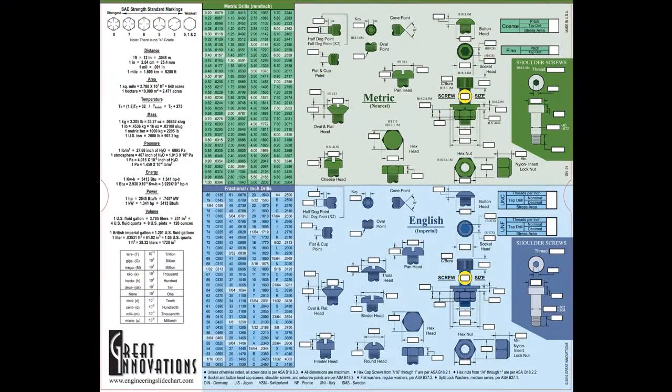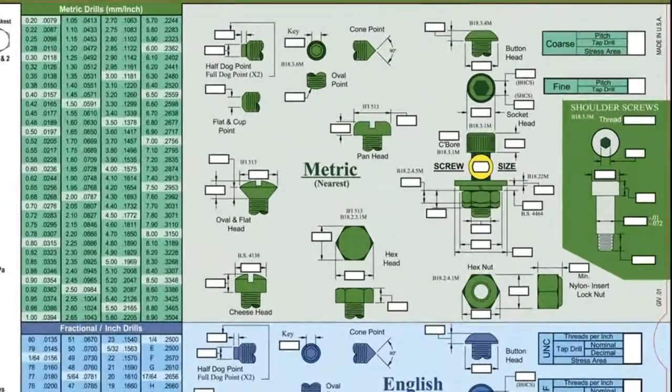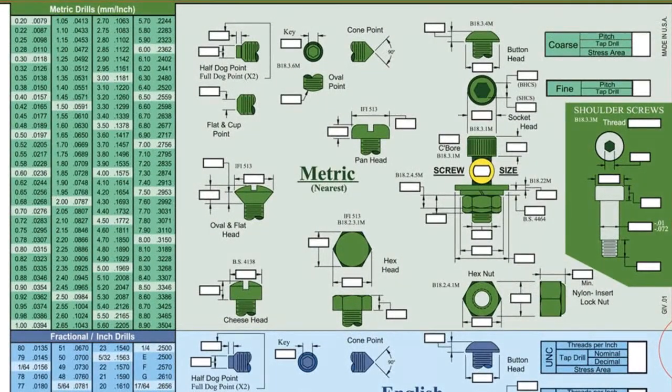The front of the chart contains information for screws, nuts, bolts, and washers. At the top of the chart, metric fasteners ranging in size from 1.6 mm to 24 mm are highlighted in green.